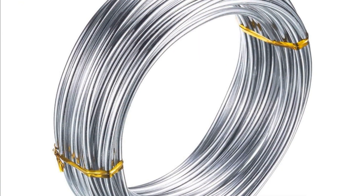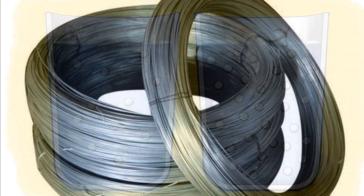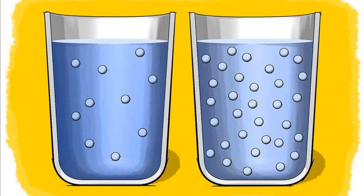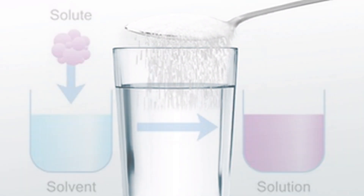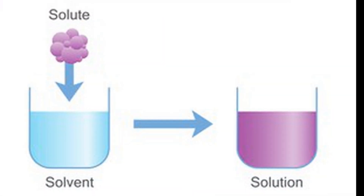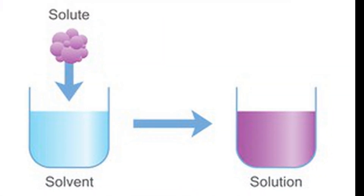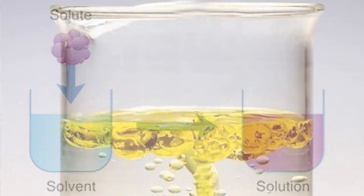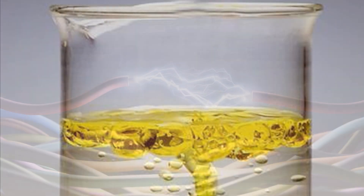Ductility: It is a property of certain solids to be drawn into wires. Silver, gold, copper and iron are very ductile. Solubility: It is a property of certain substances to completely dissolve in water. Substances that dissolve in water are said to be soluble. Substances that do not dissolve are said to be insoluble.